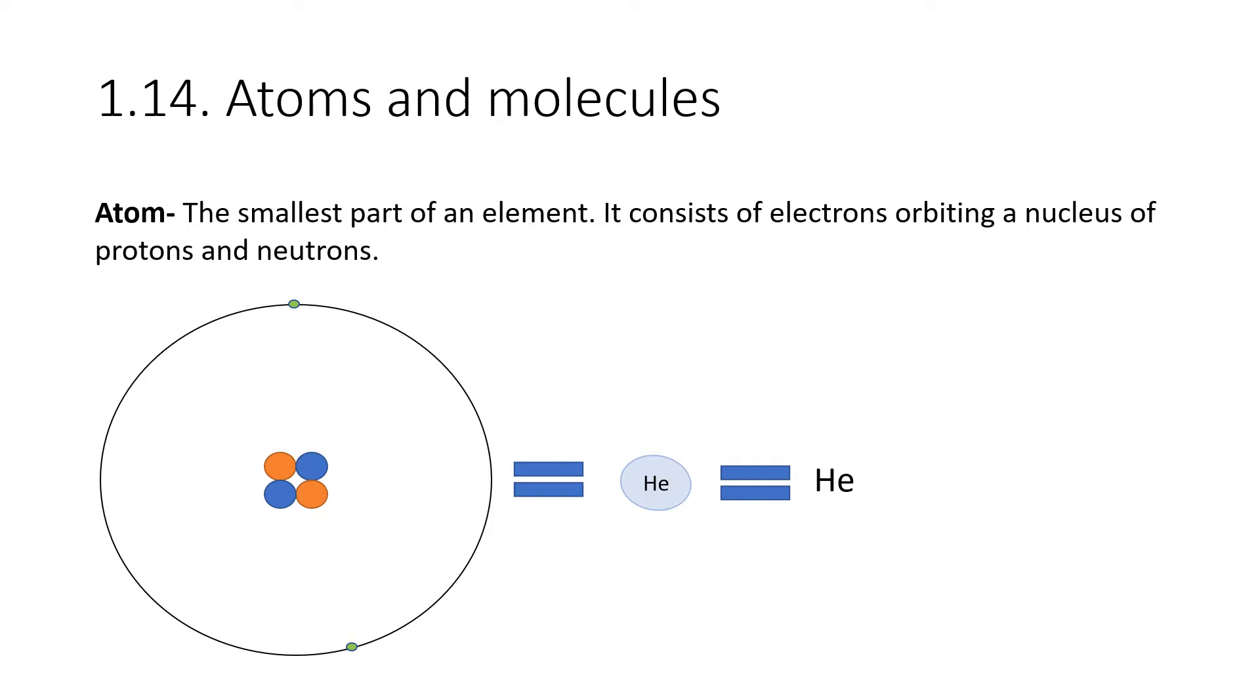1.14: know what is meant by the terms atoms and molecules. An atom is the smallest part of an element. It consists of electrons orbiting a nucleus of protons and neutrons. In this diagram I've got the blue circles as the protons and the orange as the neutrons. We have two electrons in the shells. This is a helium atom. I've shown you three ways of representing this: one as its atomic diagram, one as a circle labeled He for helium, or you might just write He.